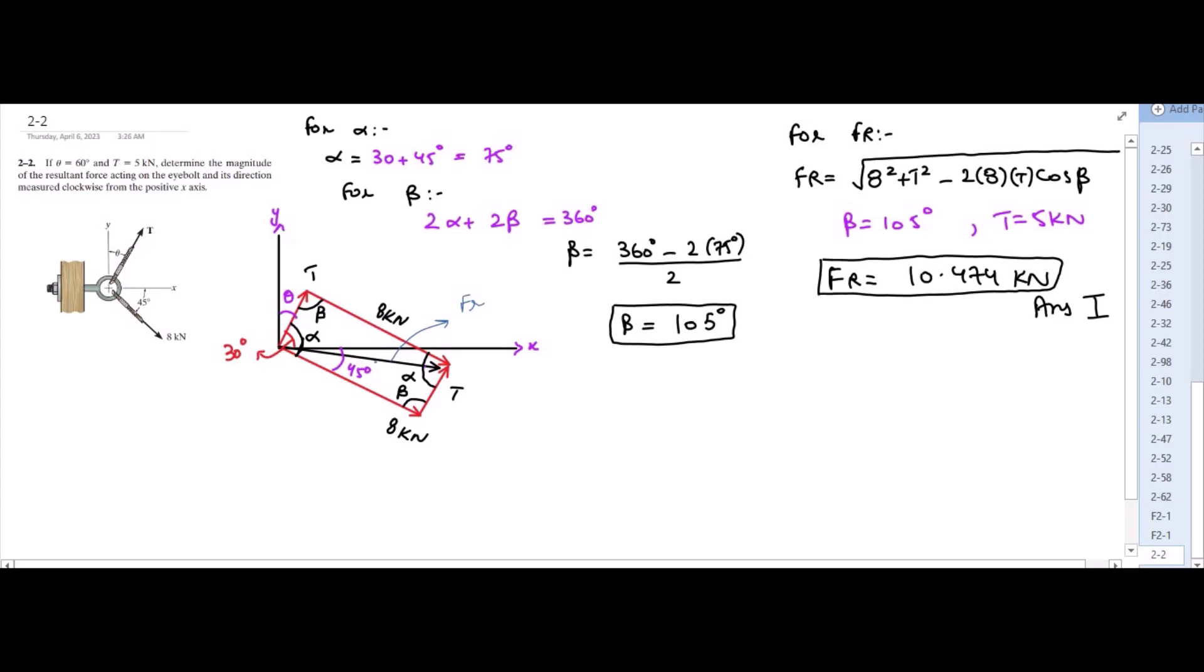Now we have to find the direction of the resultant force measured clockwise from the positive x-axis, which means we have to find this angle right here. Let us call this angle as phi and let us call this angle as gamma. Now from the construction, we could see that phi plus gamma is equal to 45 degrees. So let us find the angle gamma.